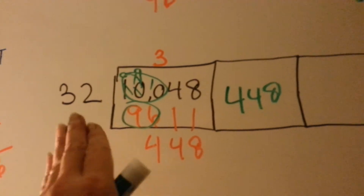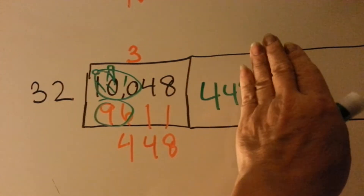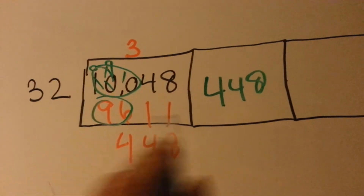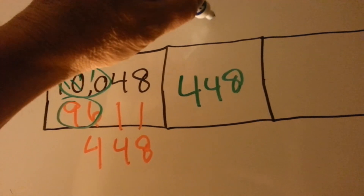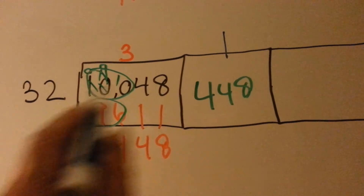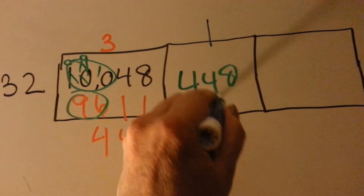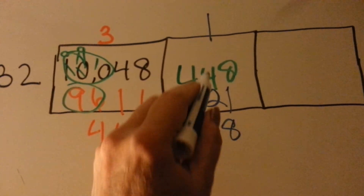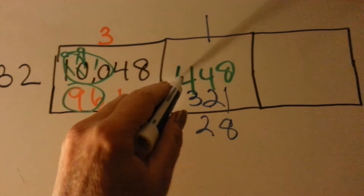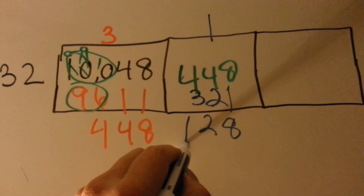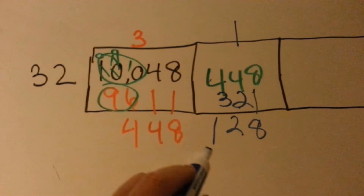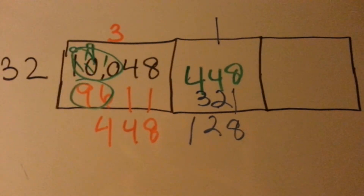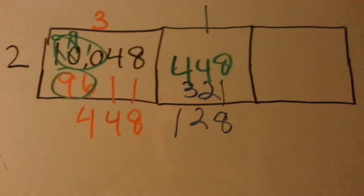And we ask ourselves, can 32 go into 4? No. Can it go into 44? Yes, it can. How many times? 32 can go into 44 one time. And 32 times 1 is 32. And now we do our subtraction. It's the 8's turn to come down. 4 take away 2 is 2. 4 take away 3 is 1. And now it's the 128's turn to go into this box.